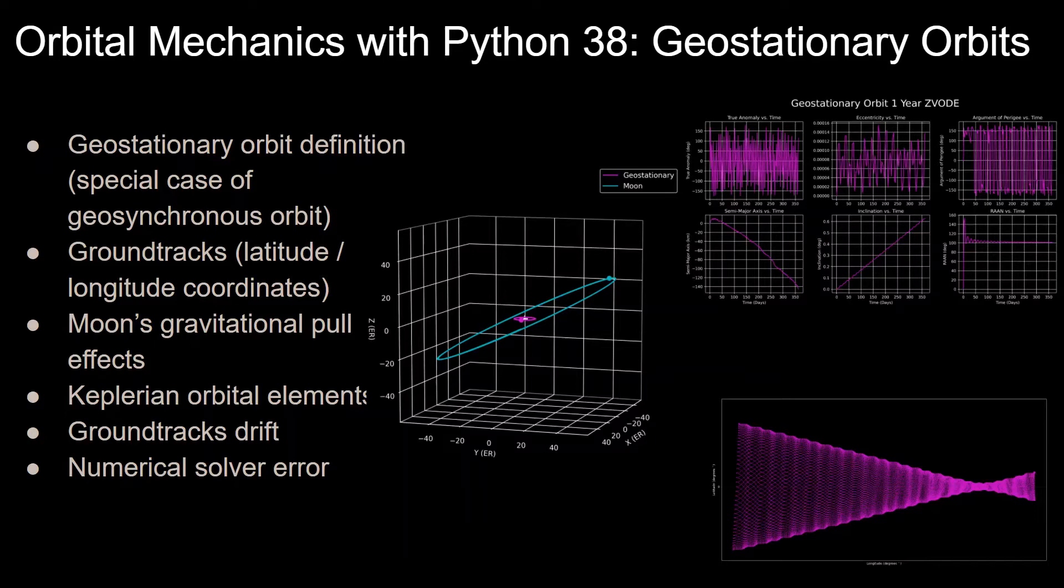This is the 38th video in this series, and in this one, I'll be going over the definition of geostationary orbits, which are a subset of geosynchronous orbits, and their associated ground tracks, which are latitude and longitude coordinates as I showed in the previous slide.